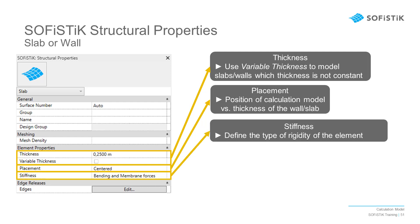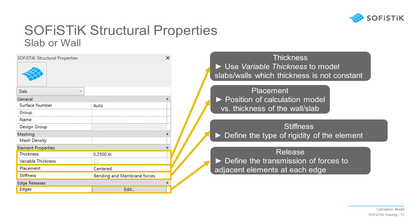Like for beams, you can set the type of stiffness. For instance, if an object is supposed to be only considered as a diaphragm, hence without bending stiffness. Finally, we can also set releases for each edge of the element. An additional window will then pop up to allow the setting for each edge, while the corresponding edge will be highlighted in the model.